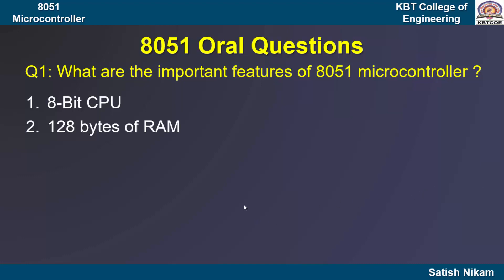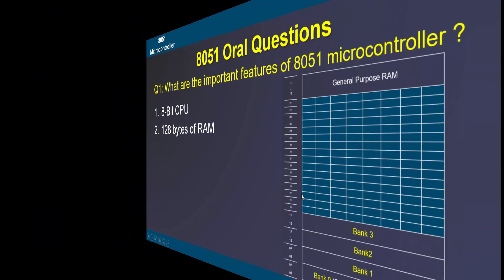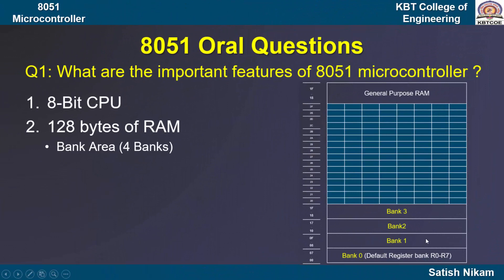8051 has 128 bytes of RAM which is used to store data temporarily. This RAM is divided into 3 parts. The first part is the bank area, which contains 4 banks, and each bank contains 8 registers from R0 to R7.